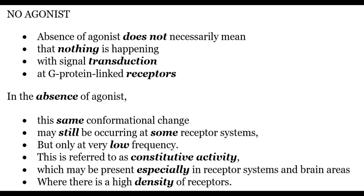Now let's discuss G-protein linked receptors as targets of psychotropic drugs. To understand this, we first have to understand the agonist spectrum. The first scenario is that there is no agonist at the receptor. Absence of agonist does not necessarily mean nothing is happening with the signal transduction at a G-protein linked receptor. Conformational changes may still be occurring at some receptor systems, but only at very low frequency. This is referred to as constitutive activity, which may be present especially in receptor systems and brain areas where there is a high density of receptors.